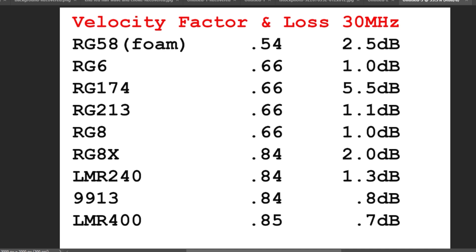RG8X has a 2 dB loss at 30 megahertz with a velocity factor of 0.84. So if you look at the velocity factors arrayed from low to high, the loss in coax is not related to the velocity factor. In fact, if you look at the last four coax cables which have basically the same velocity factor, the loss at 30 megahertz ranges from 2.0 down to 0.7 dB.